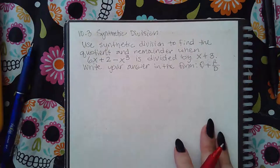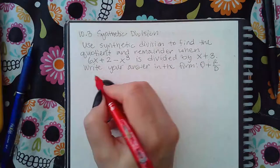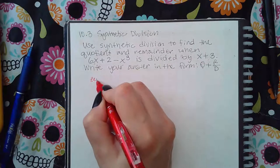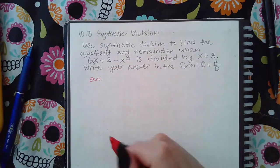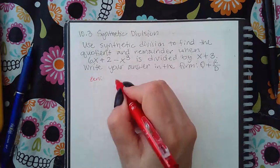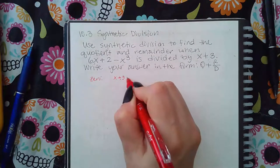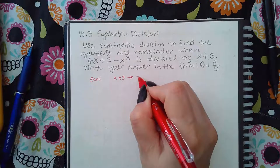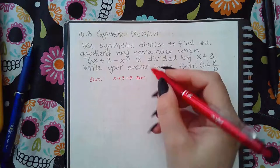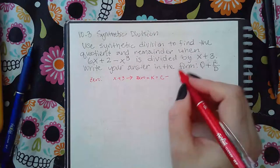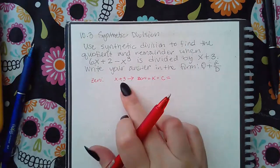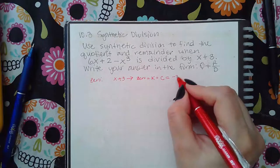The first thing I need to know is what the zero is that corresponds to x plus 3. If you have x plus 3, that means the zero, sometimes they call it k or sometimes you'll see it called c, is going to be the opposite sign of this, which is negative 3.